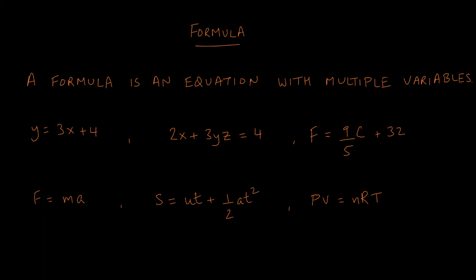F = ma is Newton's second law of motion. S = ut + ½at² is a formula relating the position of a moving object with initial velocity u, time t, and acceleration a. PV = nRT is the ideal gas law, used in physics, chemistry, and biology, relating the pressure, volume, temperature, and constants of a gas.